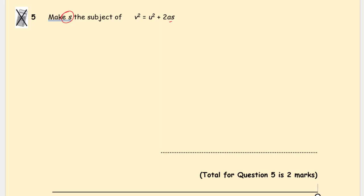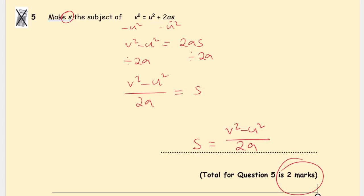u squared is on its own, so minus u squared from both sides. v squared minus u squared equals 2as. Then divide by 2a both sides because we are making s the subject. So (v squared minus u squared) over 2a is equal to s. So s equals (v squared minus u squared) over 2a. Two marks.